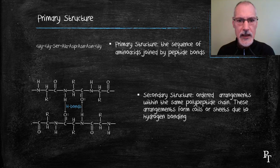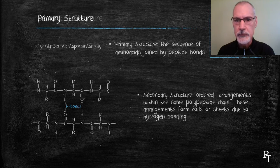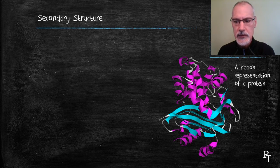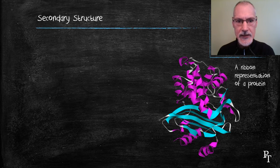Now, that hydrogen bonding can result in two particular formations or shapes. Here I've shown an example of a protein over here on the right. You'll notice coils and flat sheets.